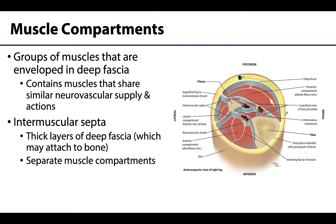A muscle or fascial compartment is composed of a few things. First, it is composed of a group of muscles that are enveloped in deep fascia — looking at a group of muscles here that is surrounded by or enveloped within deep fascia. Specifically, deep fascia — recall that fascia is a generic term for grossly visible connective tissue.